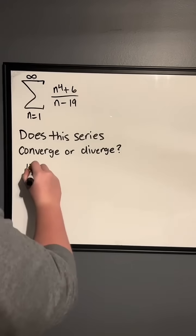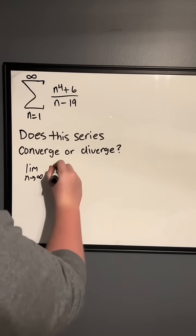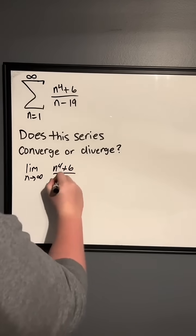So we have the limit as n goes to infinity of n to the 4th plus 6 over n minus 19.